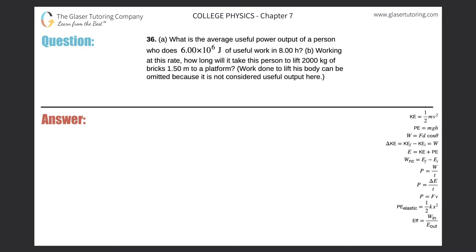Number 36, letter A. What is the average useful power output of a person who does 6 times 10 to the 6 joules of useful work in 8 hours?